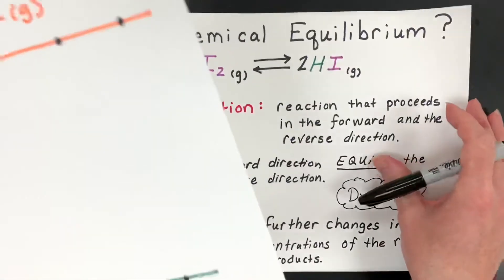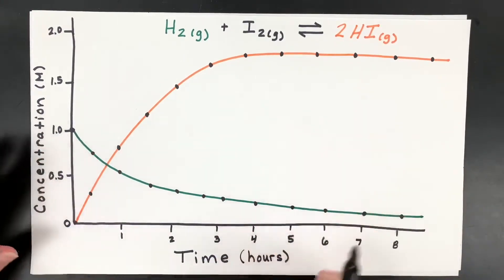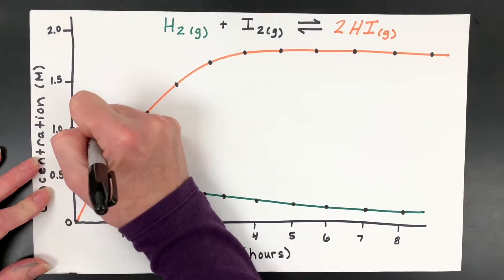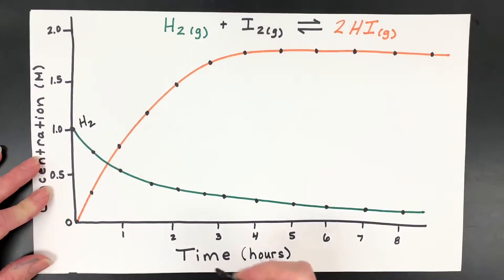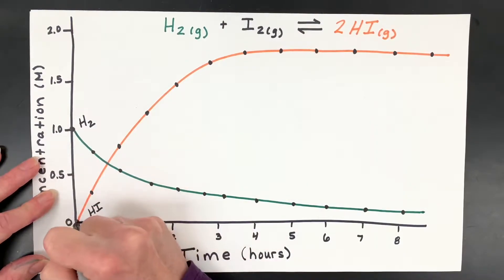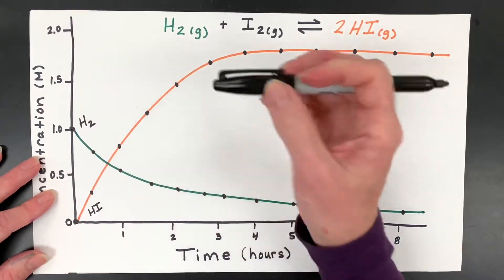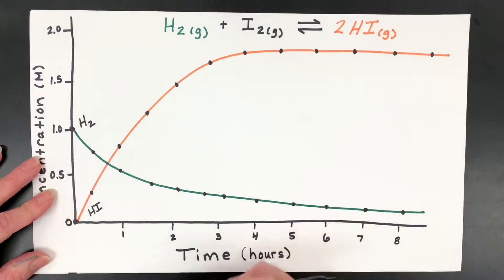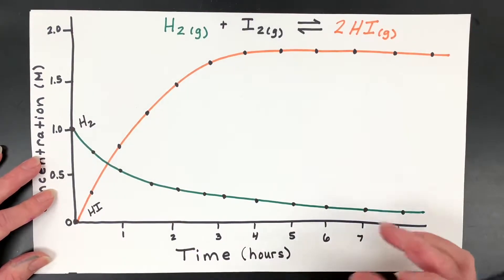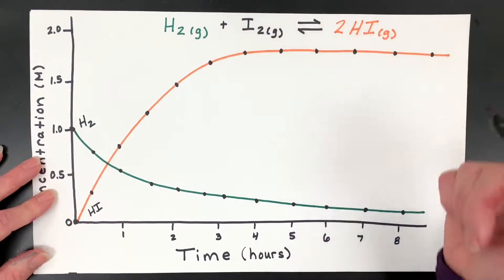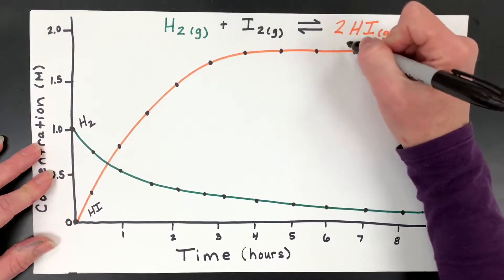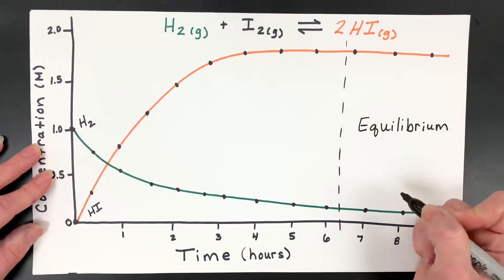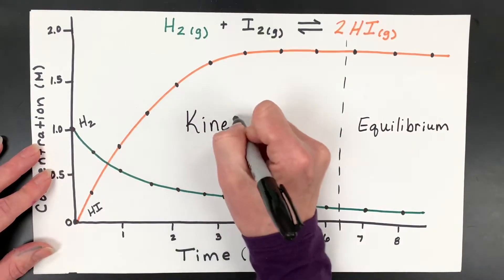Let's look at a graph from a previous video. We started with our concentration of hydrogen here. As the reaction goes, you sacrifice some of the hydrogen — it reacts with the iodine and the concentration goes down so that you can make your product, the HI. As time goes along, we see no net change at some point. Somewhere around here, we started to reach chemical equilibrium. Remember the rates are equal at this point. This whole section is called kinetics, where you have collision theory and reaction rates.